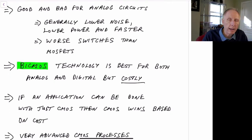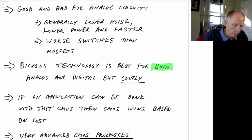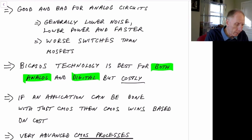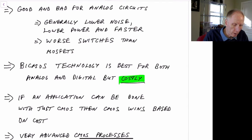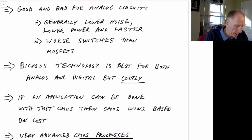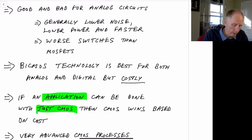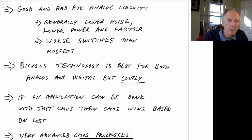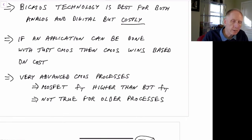There are some BiCMOS technologies that include both CMOS and bipolar transistors. That would be very good for both analog, where you can use bipolar transistors where they help, and digital, where you use CMOS. However, BiCMOS is not that popular a technology because of cost — you've added more process steps. Generally, if you can do everything with just CMOS, that will win because it's lower cost. Even very modern CMOS technologies generally don't include bipolars, though some older technologies did include bipolar transistors to improve analog performance.